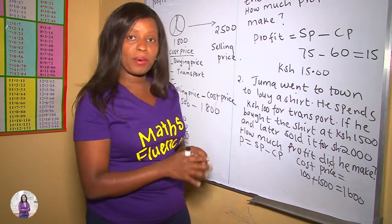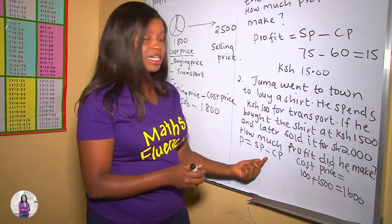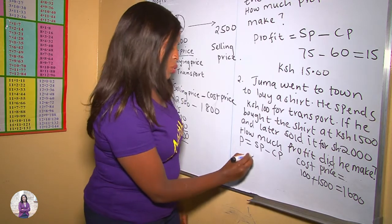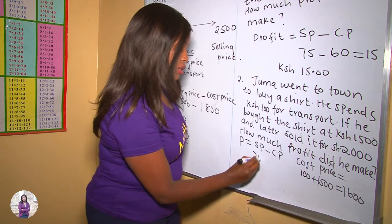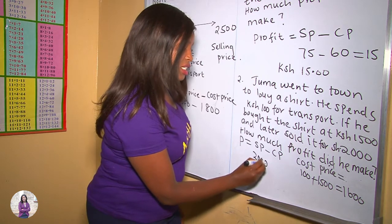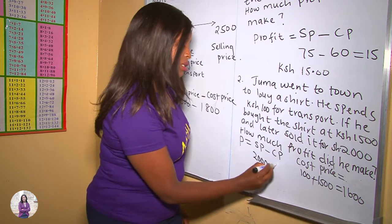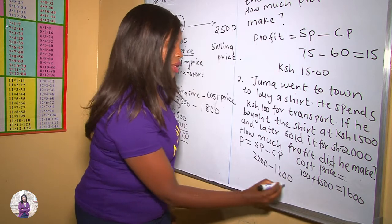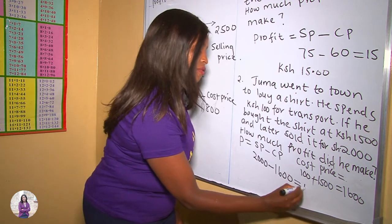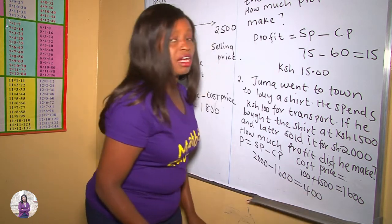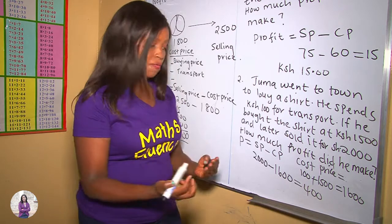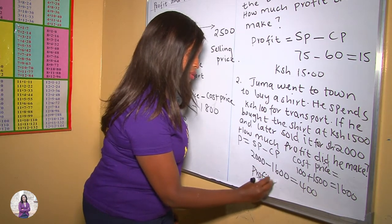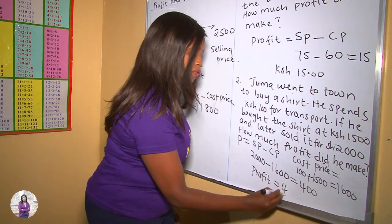Now our profit equals selling price take away cost price. Our selling price is 2,000 take away the cost price of 1,600. When you take away, you get 400. Therefore, the profit equals 400 shillings.